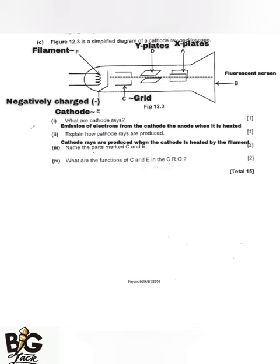Question three asks to name the parts labeled C and E. Part C is the grid, and part E is the cathode. Question four asks for the functions of C and E in the cathode ray oscilloscope. The function of C, the grid, is to control the amount of the beam of electrons passing through the vacuum. The function of E, the cathode, is to produce the beam of electrons.